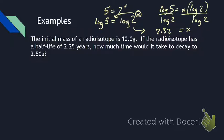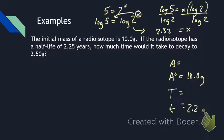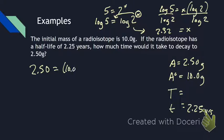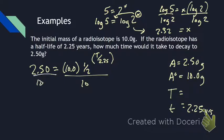So the formula is A equals A-naught times one-half to the power of big-T over little-t. The initial mass is 10.0 grams, the half-life is 2.25 years, and the final amount is 2.50 grams. So: 2.50 equals 10.0 times one-half to the power of big-T over 2.25. We don't know big-T. First, let's get rid of the 10 by dividing both sides by 10, giving us 0.250 equals one-half to the power of T over 2.25.